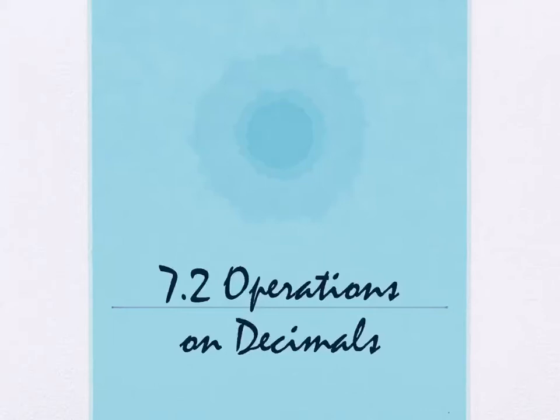Today we're going to start section 7.2, though we're not going to finish today. We're looking at operations on decimals in this section — the basic operations you learn in elementary school: addition, subtraction, multiplication, and division — but specifically how they relate to decimals.